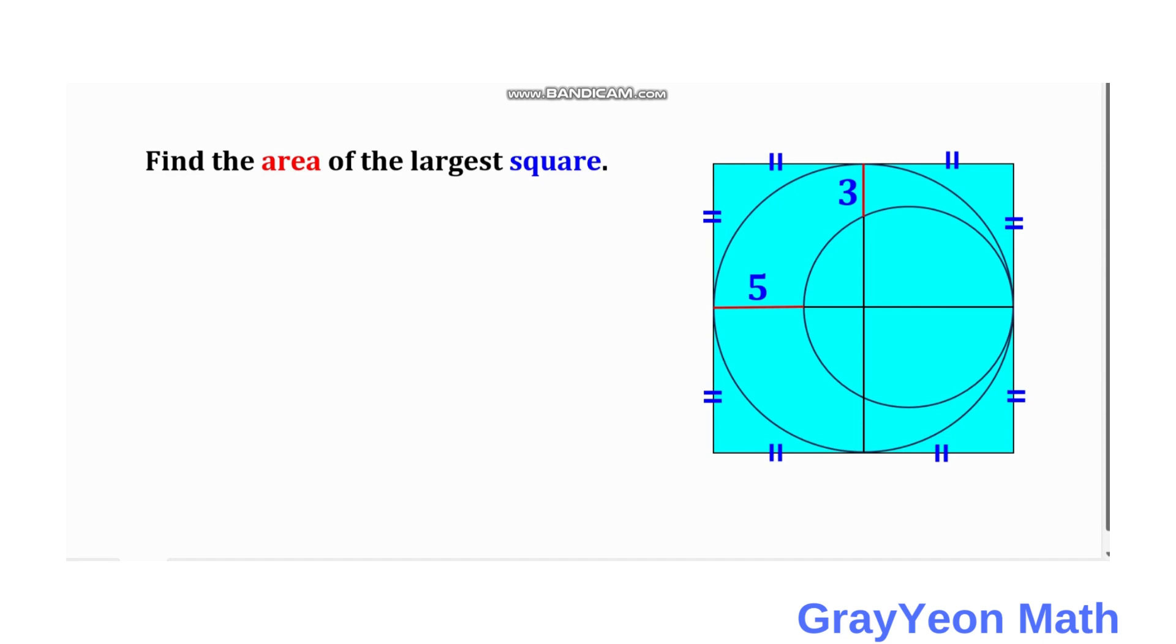is we need to let this side as a. This is a, and if that is a, then this is a minus 3. And if that is a, then this should be a also.